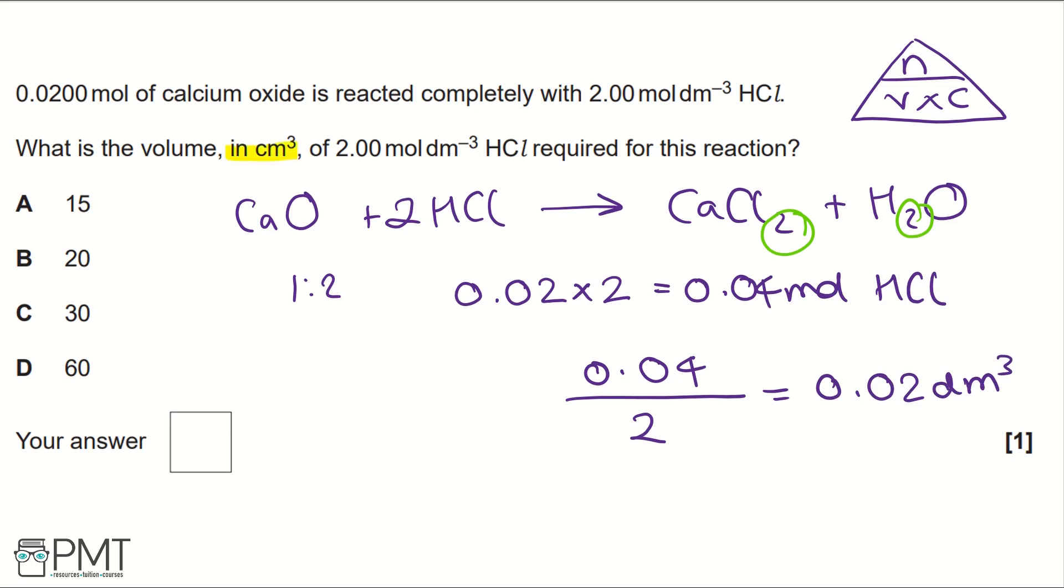The question is asking for centimetres cubed, so we need to multiply by 1000, and that gives us 20 centimetres cubed. Therefore our answer is B.